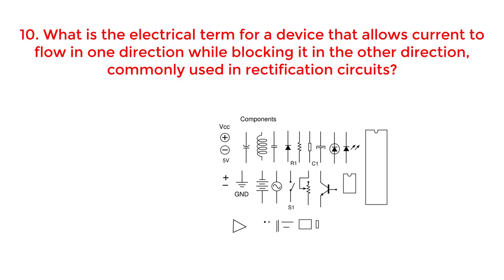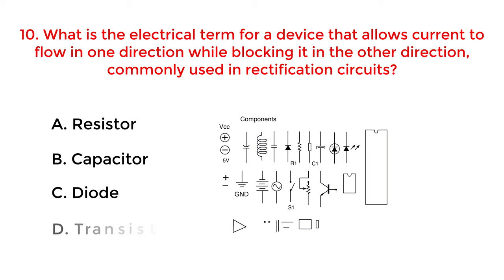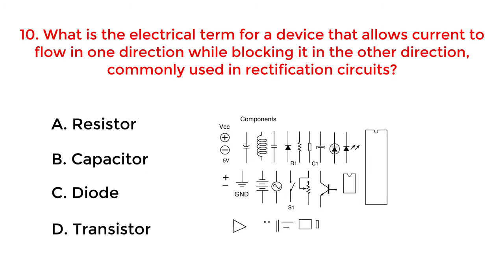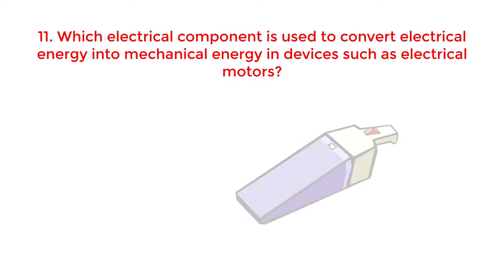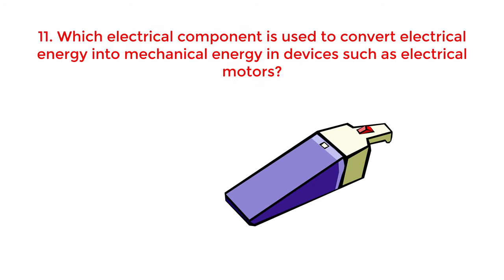What is the electrical term for a device that allows current to flow in one direction while blocking it in the other direction, commonly used in rectification circuits? A. Resistor. B. Capacitor. C. Diode. D. Transistor. The correct answer is option C: Diode.